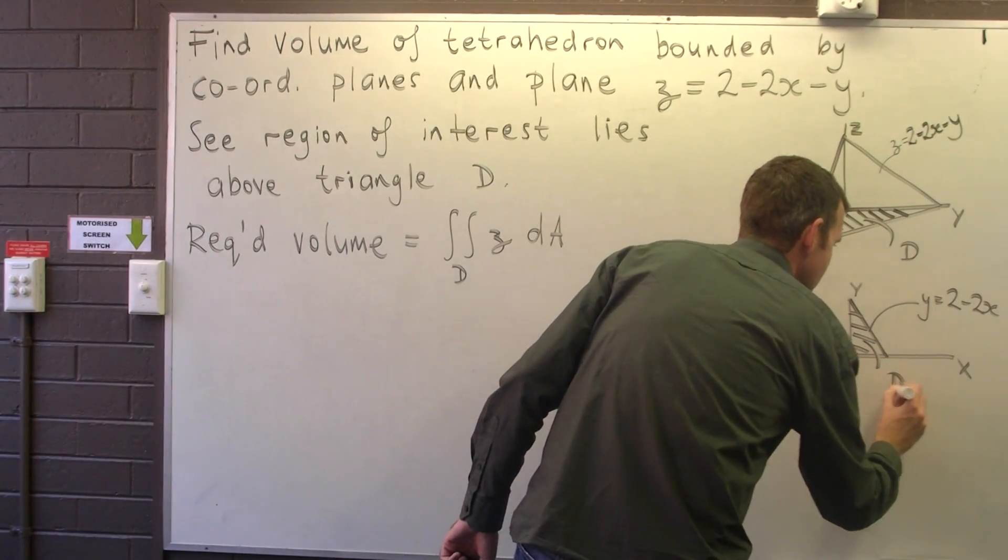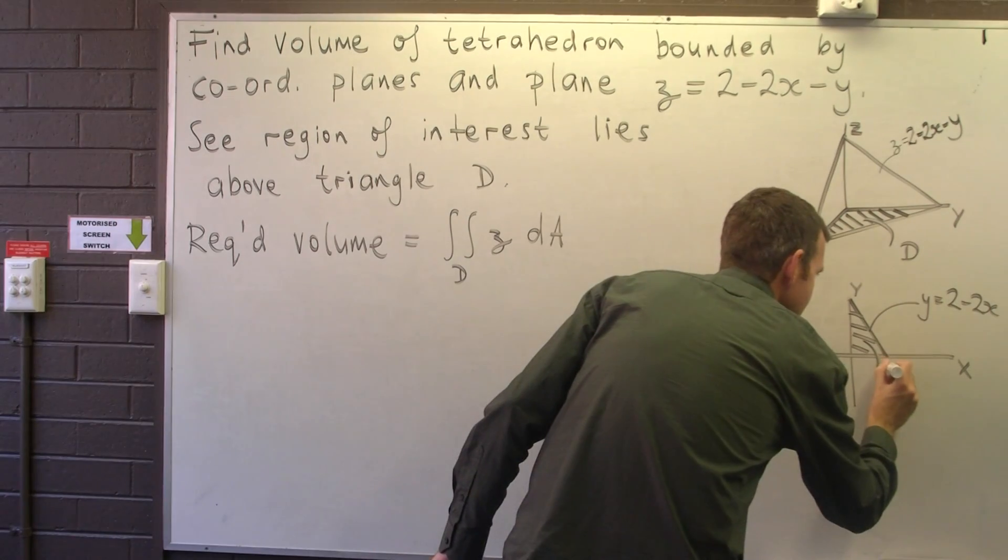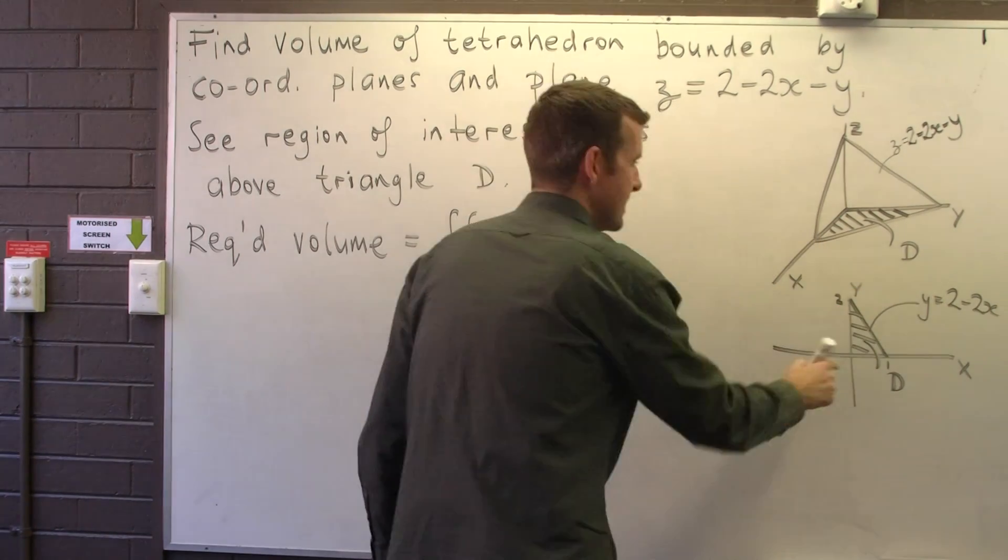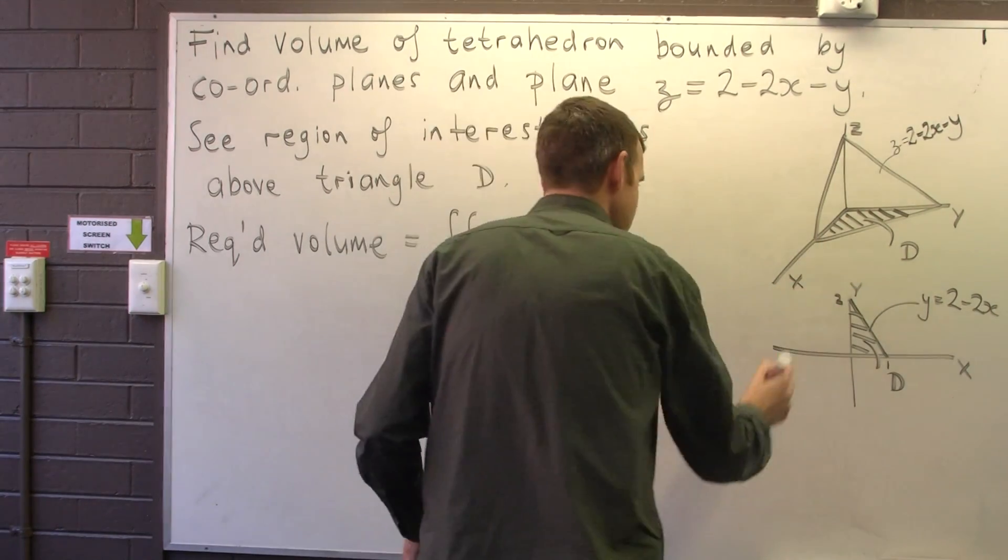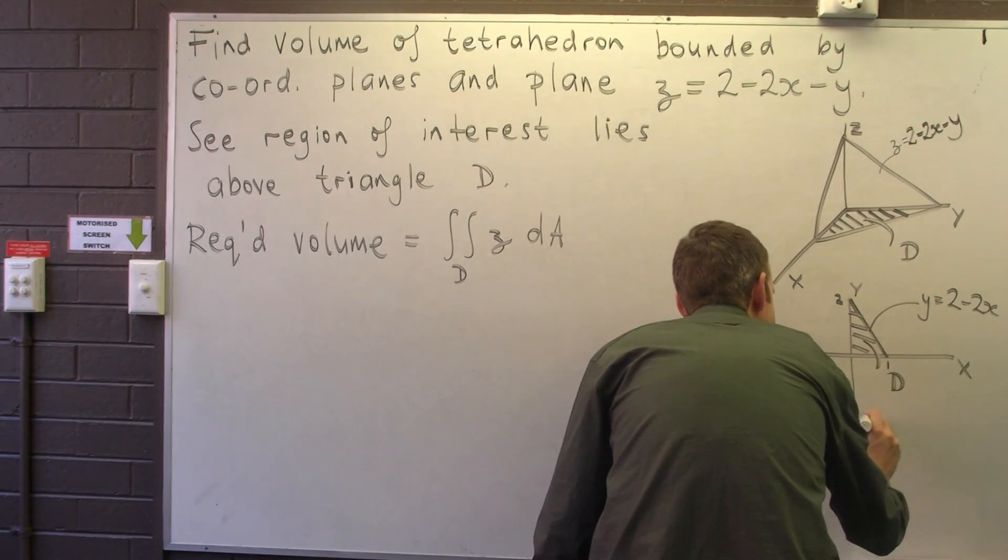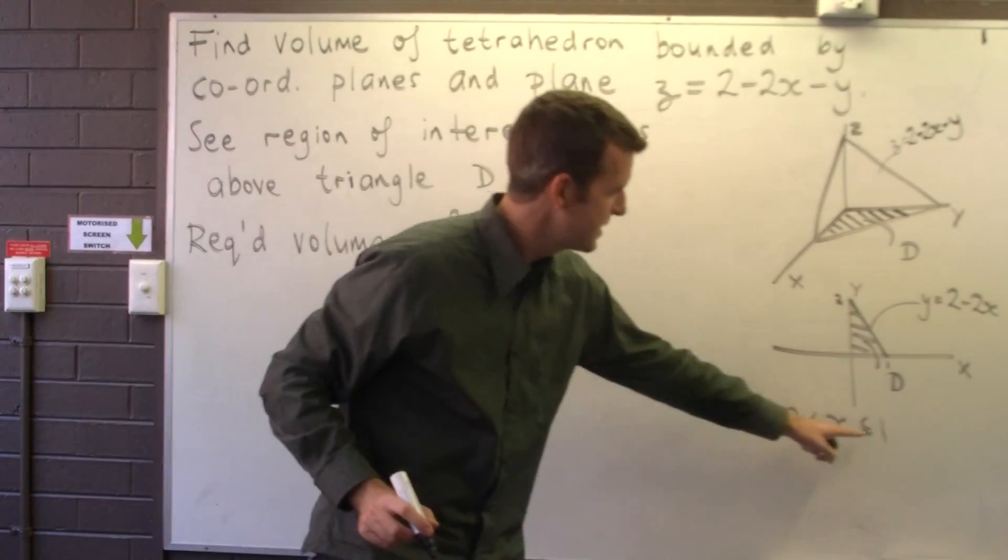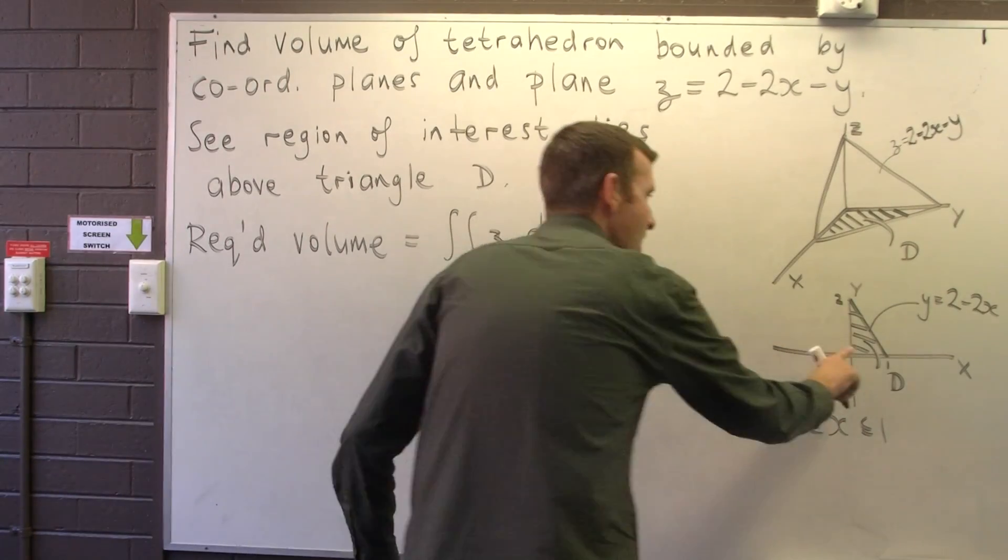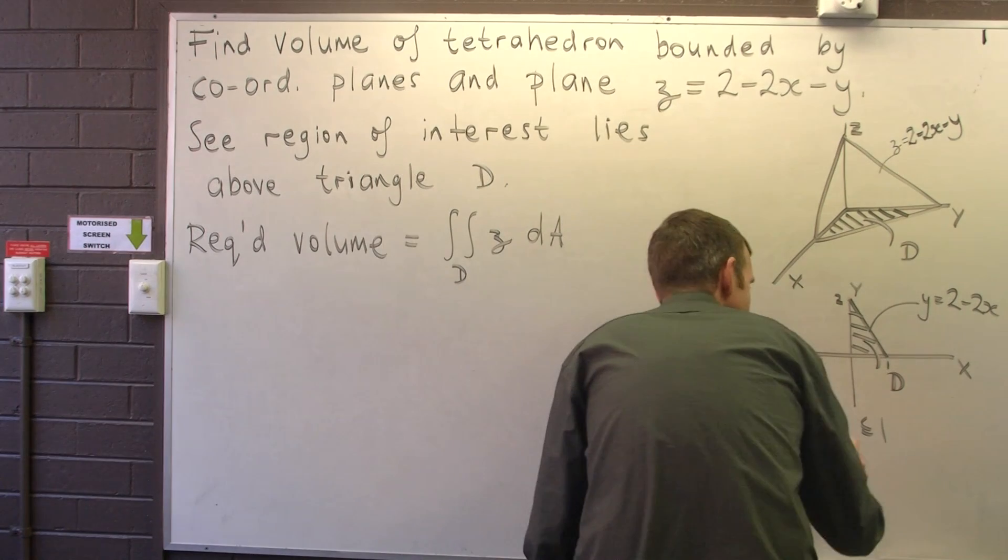So how do we describe D? Well, we can do it two ways of course. Here I'm going to choose the following: I'm going to put X between two parallel lines and Y between two non-parallel lines.